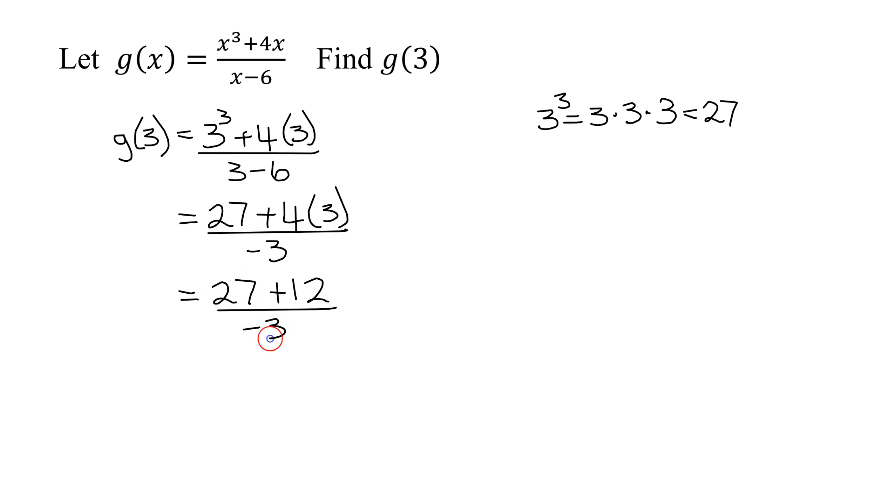all divided by negative 3. So 27 plus 12 is 39, divided by negative 3.